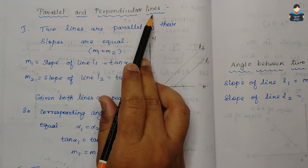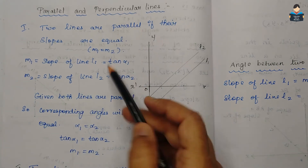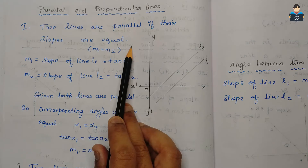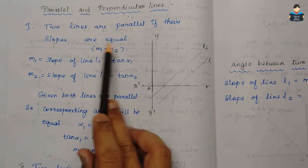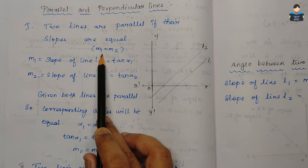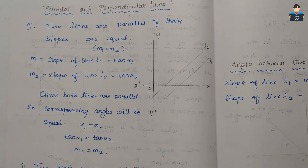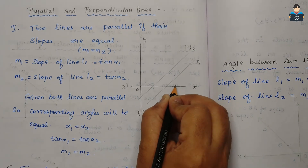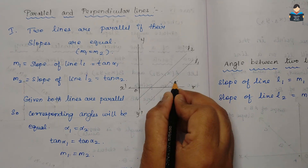Next: parallel and perpendicular lines. Two lines are parallel if their slopes are equal. So for two parallel lines, slope M1 equals slope M2. Line L1 has inclination alpha1 and line L2 has inclination alpha2, and slope1 equals tan alpha1, slope2 equals tan alpha2.